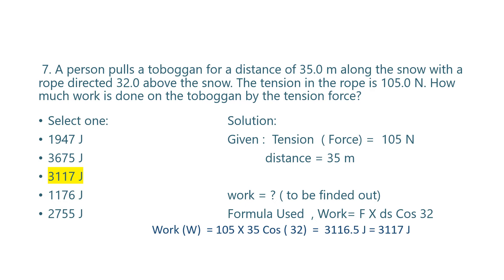Question number 7. A person pulls a toboggan for a distance of 35 meters along the snow with a rope directed 32 degrees above the snow. The tension in the rope is 105 Newtons. How much work is done on the toboggan by the tension force? Using W equals F times displacement times cos theta: W equals 105 times 35 times cos 32 degrees, which comes out to be 3116.5 joules, or roughly 3117 joules.